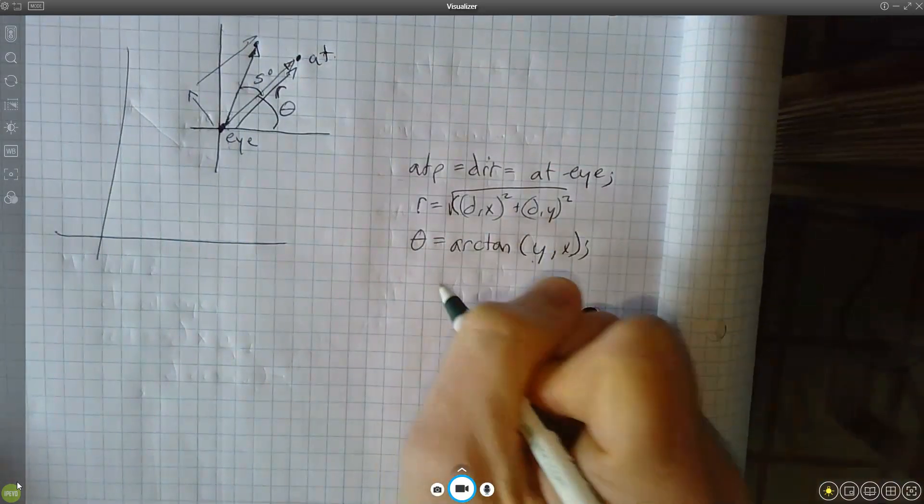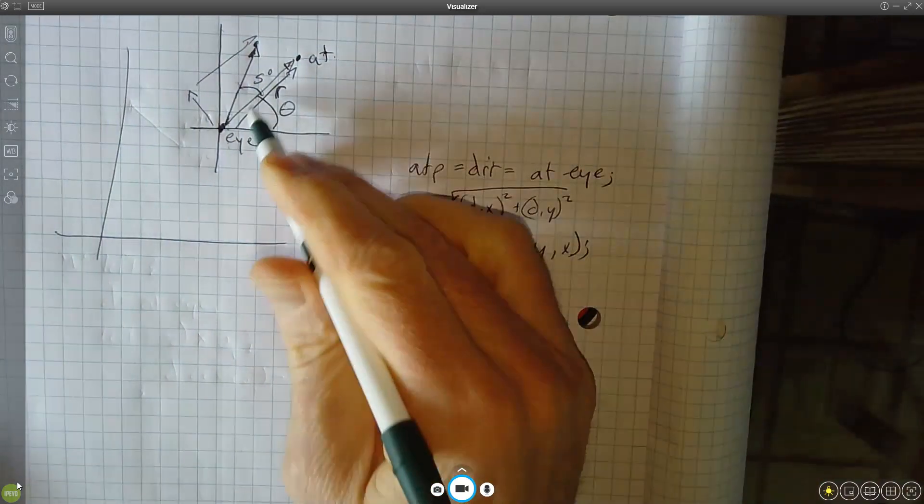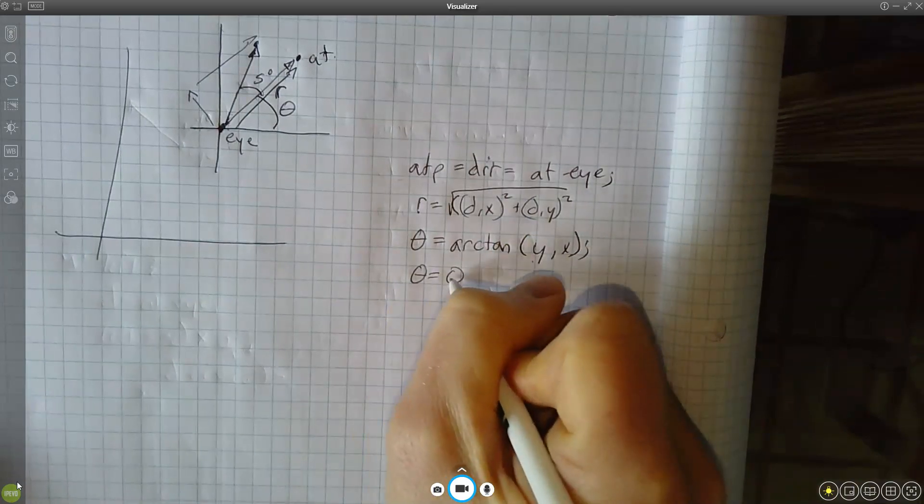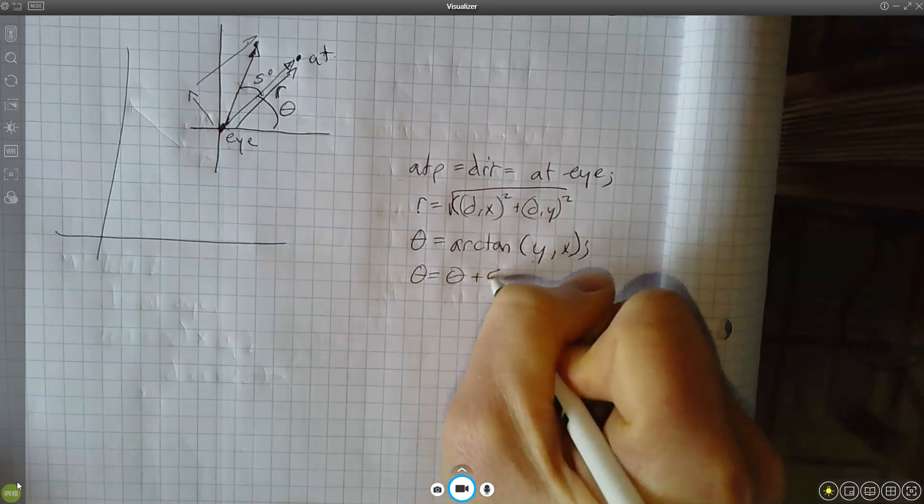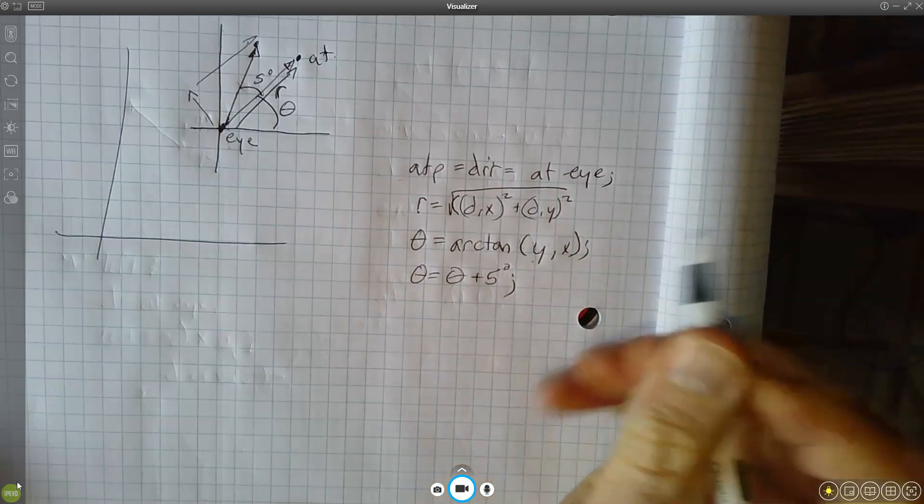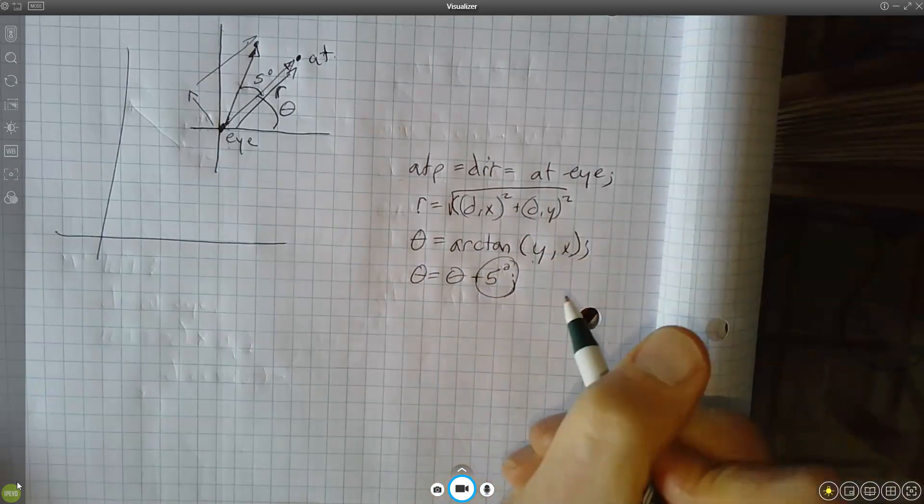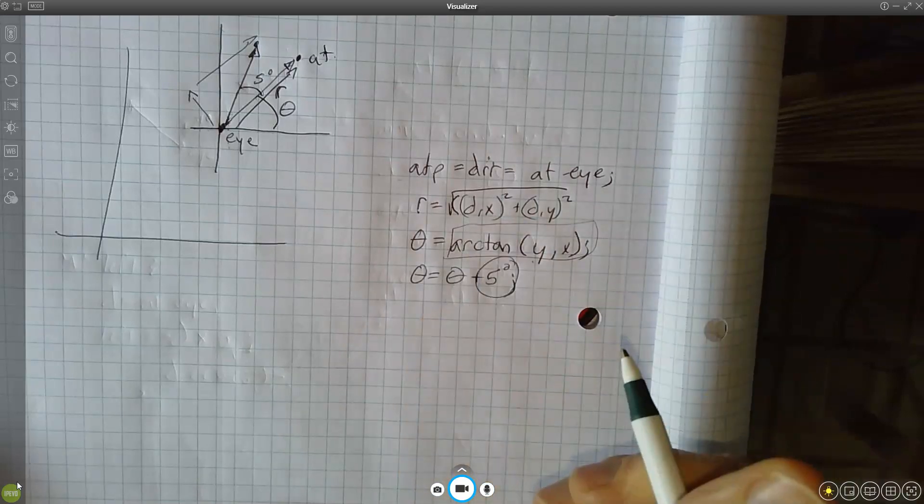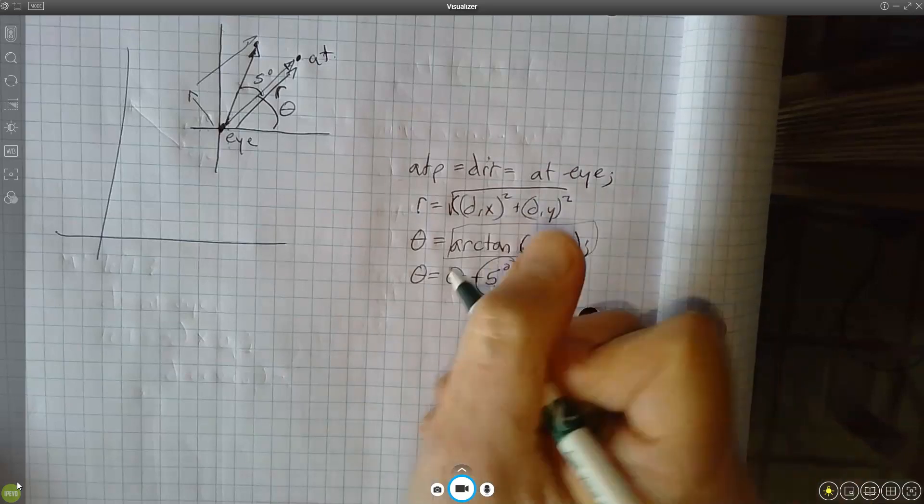So then what do I need to do? Well, if I want to rotate a little bit, I need to say theta equals theta plus five degrees. Now careful here, I've written this in degrees, but very likely our tangent functions are working in radians. So remember about keeping your degrees and radians proper.